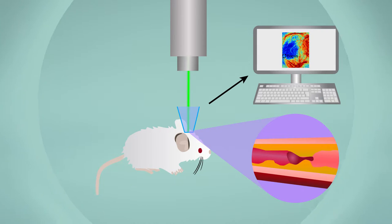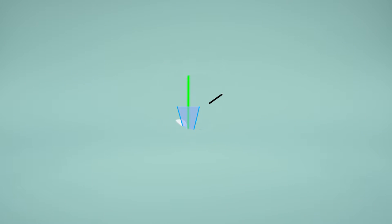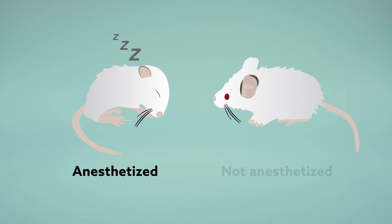Using this method, the researchers triggered strokes in two groups of rats. Half received the anesthetic isoflurane and were asleep, while the other half did not and were awake.